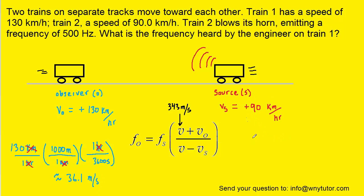If you convert the 90 kilometers per hour in a similar way, you would get approximately 25.0 meters per second. So now that all the speeds are in meters per second, we can plug them into the Doppler effect formula.